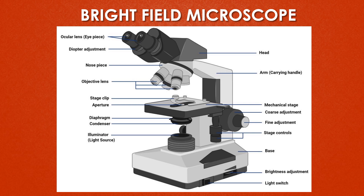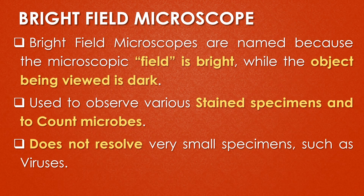This is the image of the bright field microscope — this is a normal microscope which we are using in our laboratories. The bright field microscopes are named because the microscopic field is bright while the object being viewed is dark. This bright field microscope is used to observe various stained specimens and count the microorganisms, but it does not resolve very small specimens like viruses.